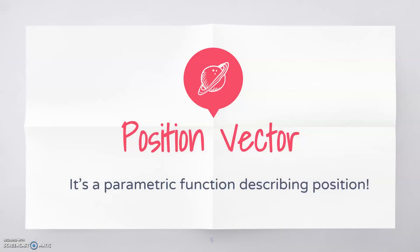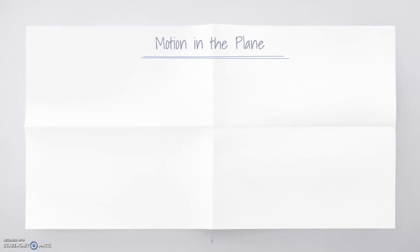One way we can describe motion is with a position vector, and the position vector is just a parametric function describing the position of our particle in the plane. The position tells you your x-coordinate and your y-coordinate at a given time. That looks just like a parametric equation.